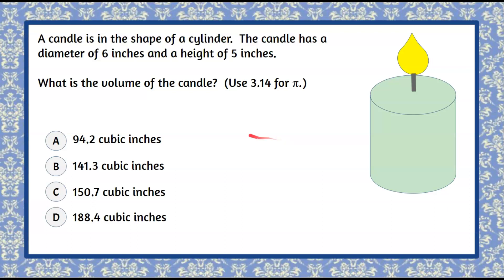Here's our question for today. A candle is in the shape of a cylinder. The candle has a diameter of six inches and a height of five inches. We're asked what is the volume of the candle and use 3.14 for pi and here are your four answer choices all in cubic inches.